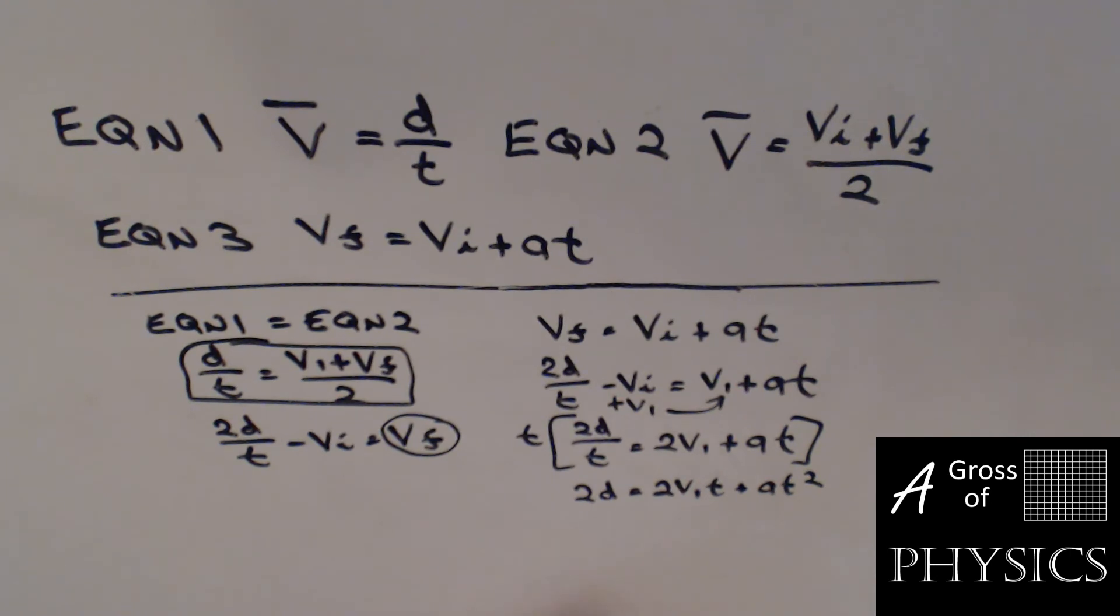We then take 2 and divide every term by 2 to eliminate the 2s. We end up with our half terms. We're left with our equation 4, which is D equals VIT plus 1 half AT squared. Now, wasn't that fun?